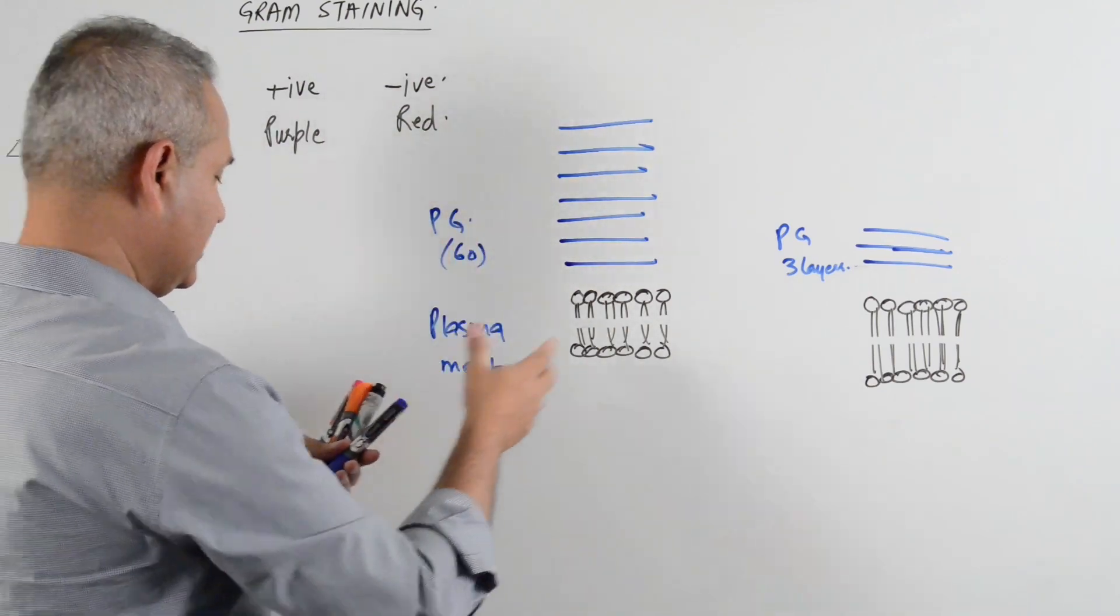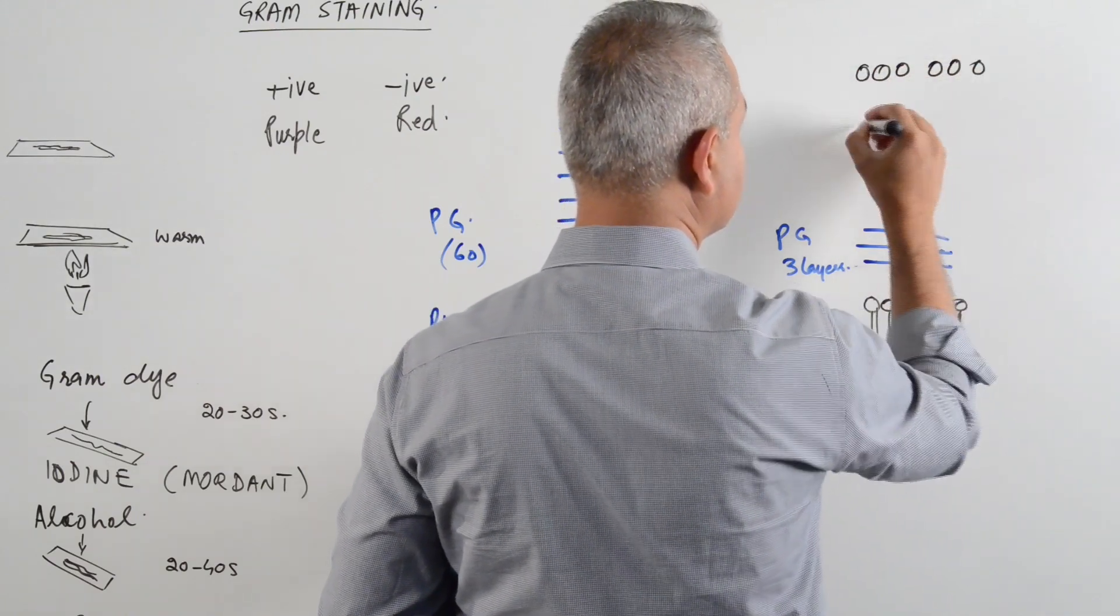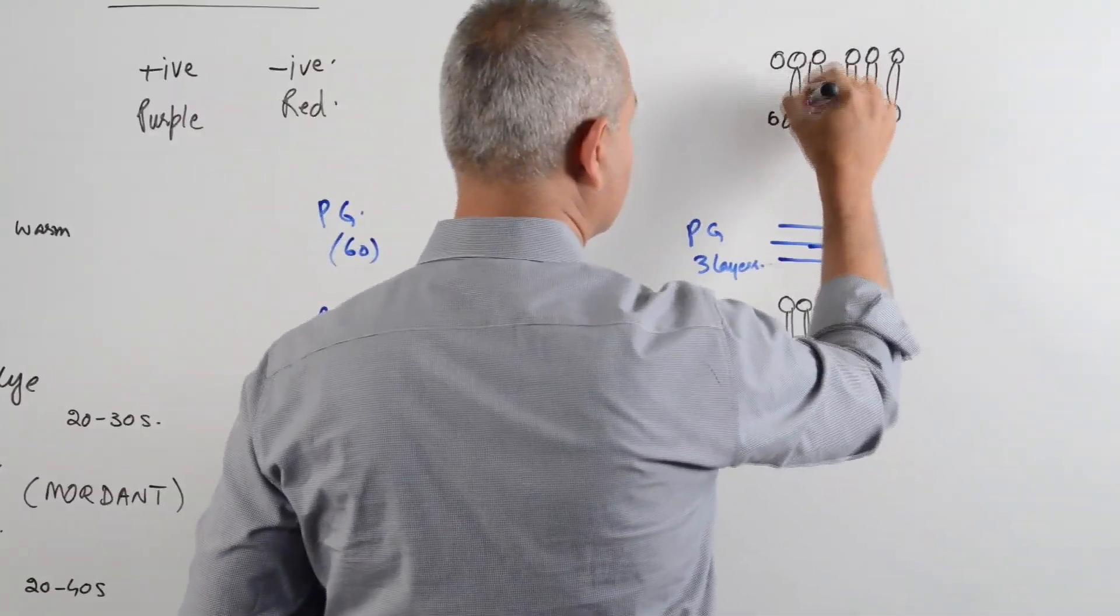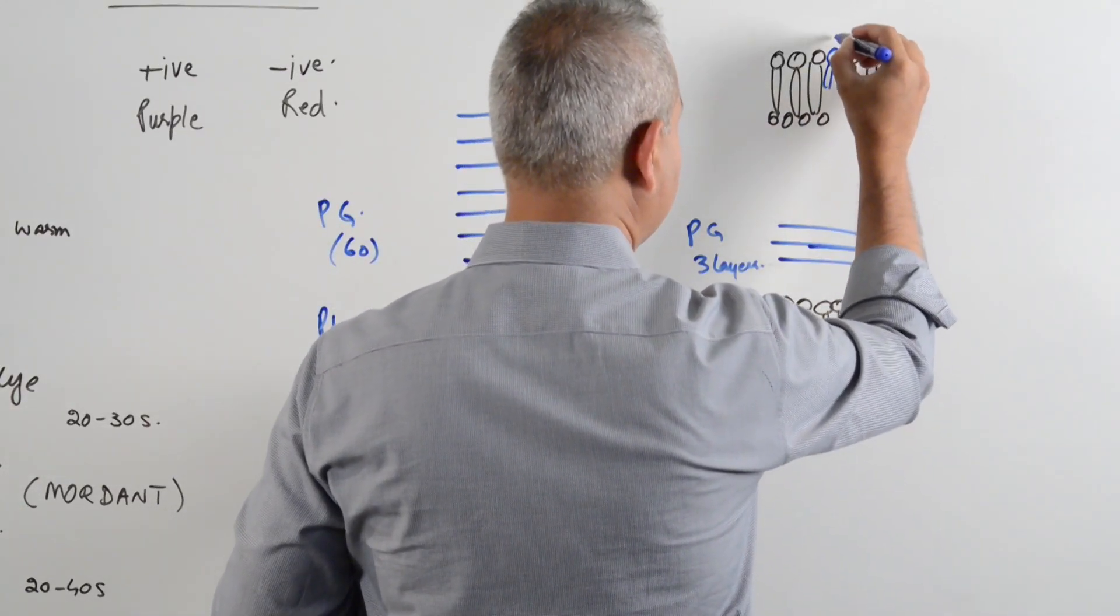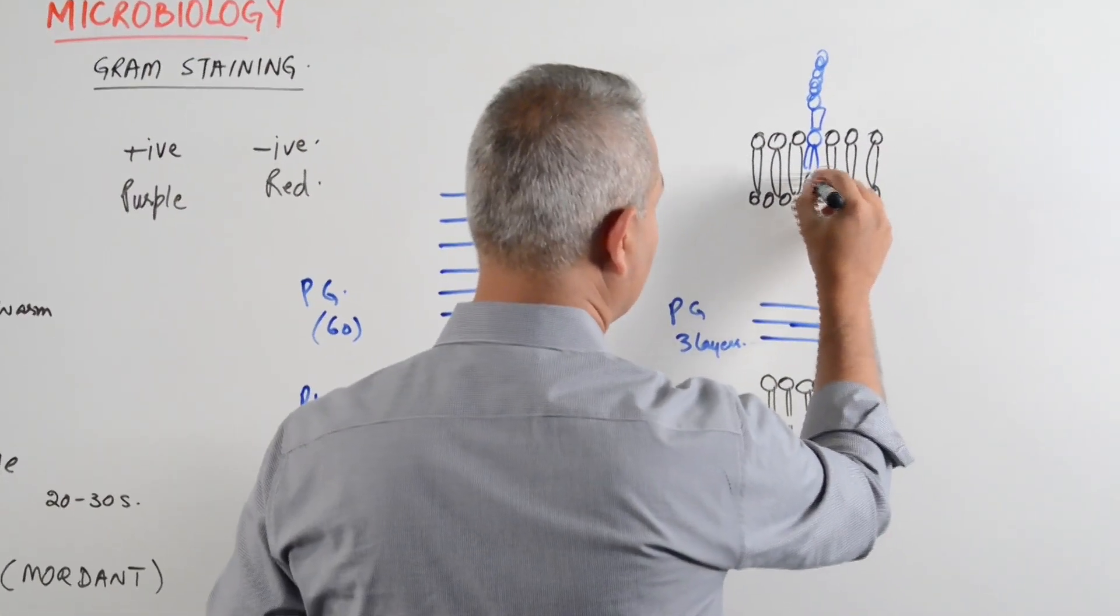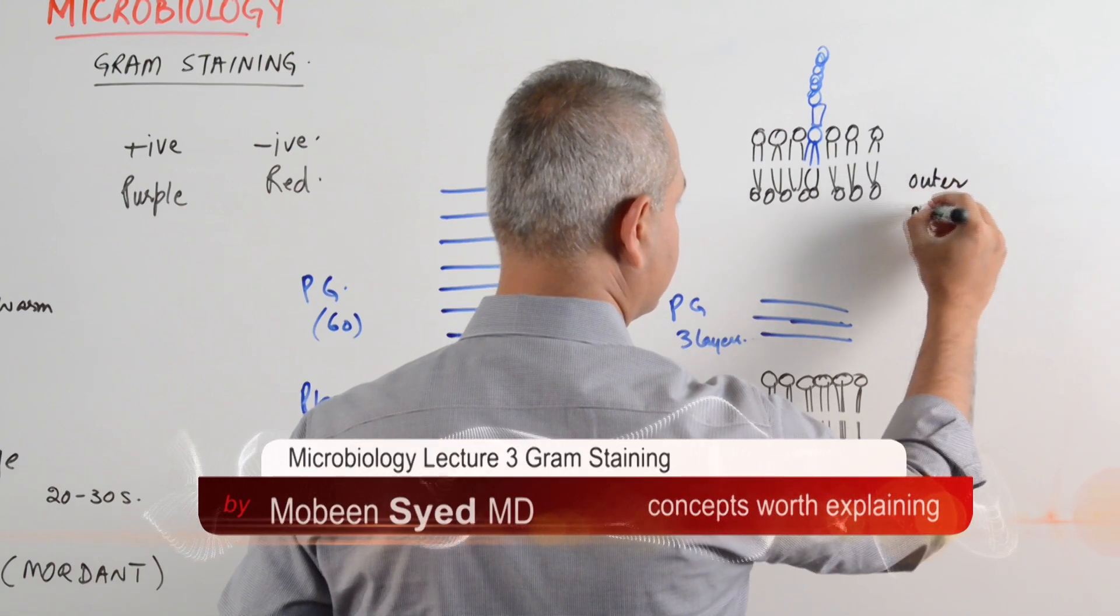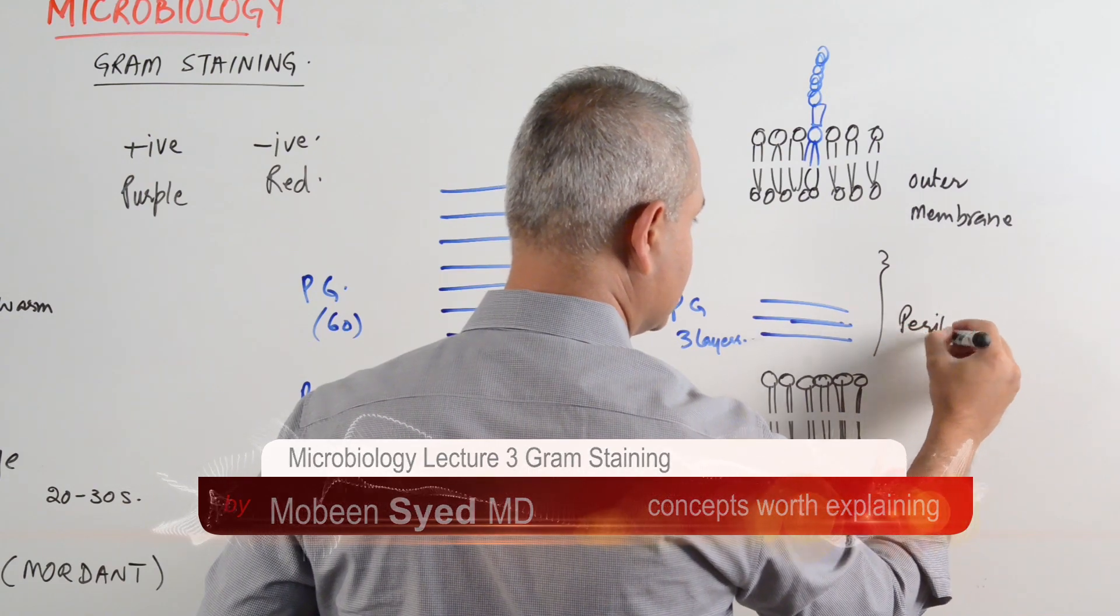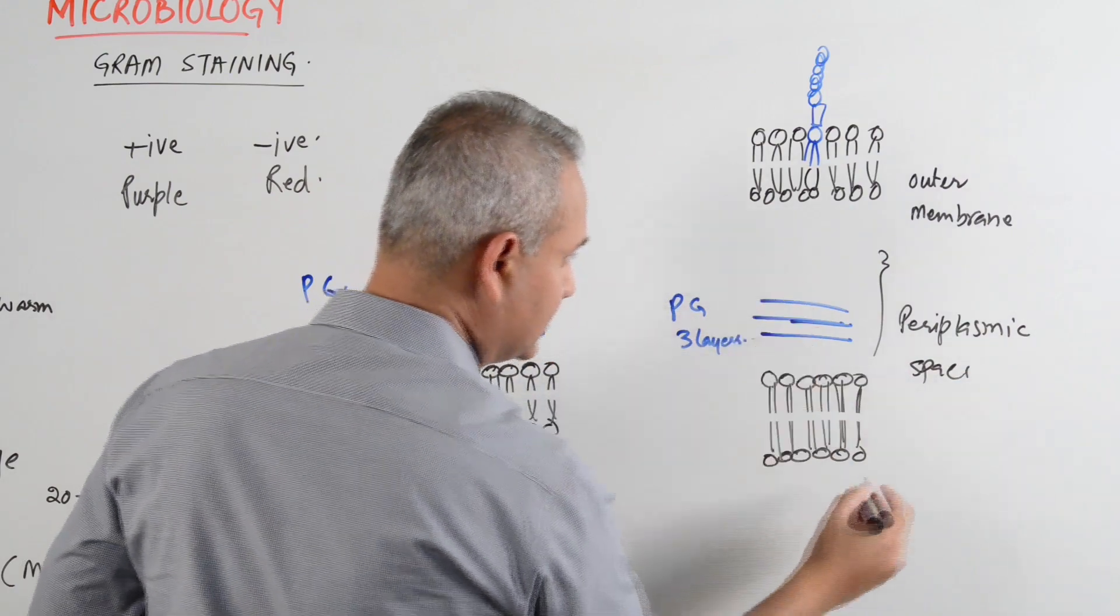So now this is the peptidoglycan, then on top of this one we have and I am going to make a lipopolysaccharide here. So this is the outer membrane. This is periplasmic space, space is around these two layers and this is the plasma membrane.